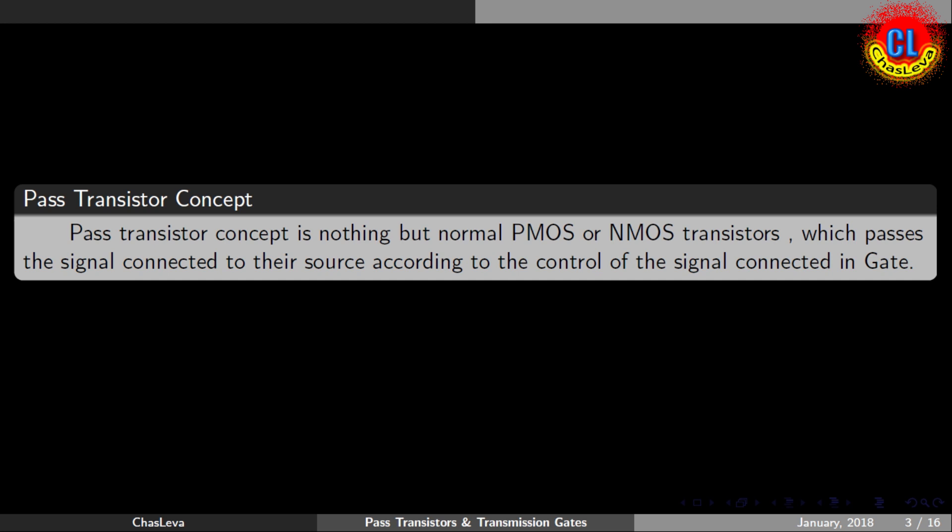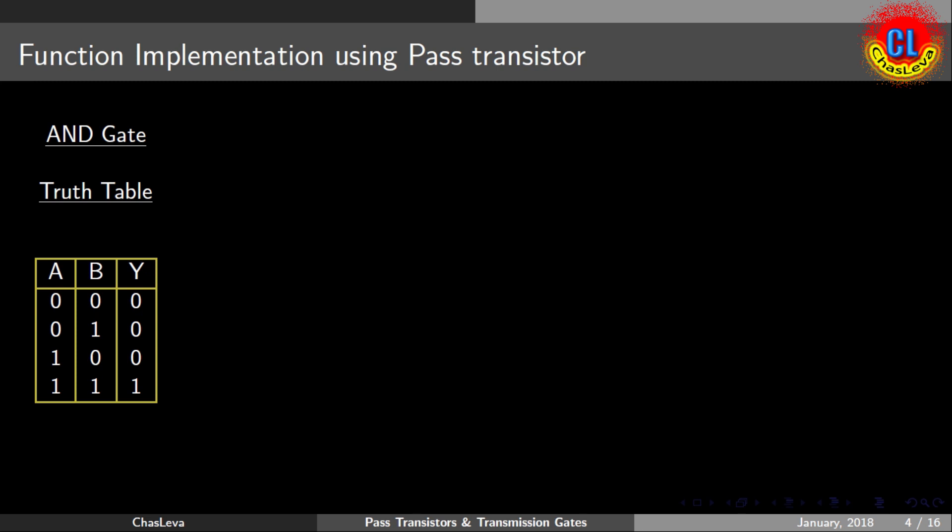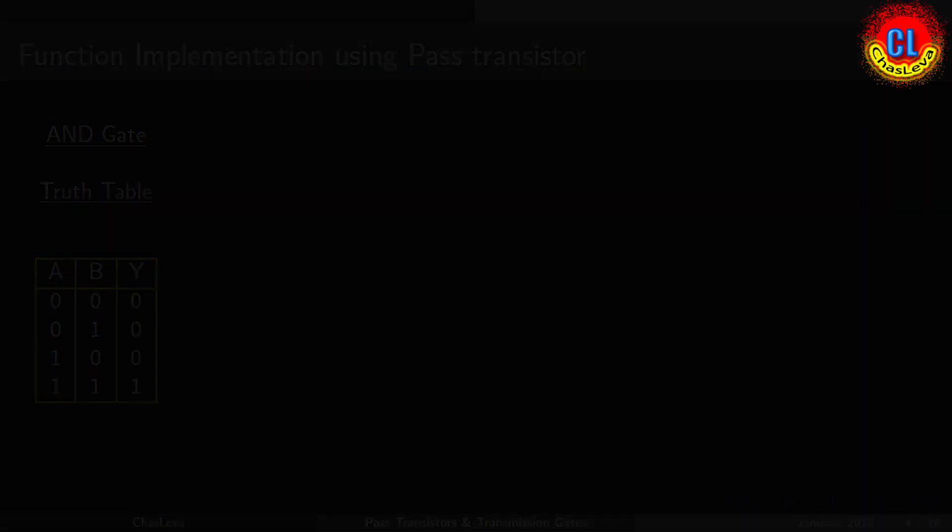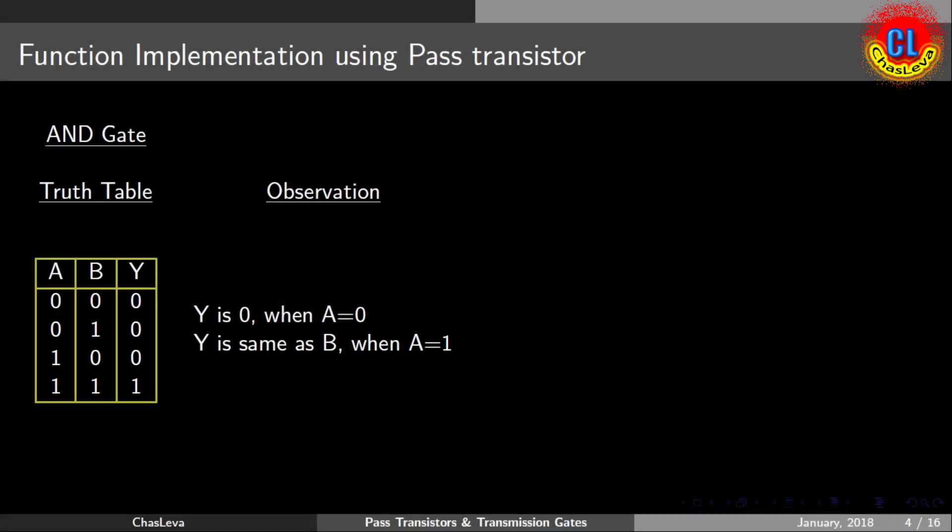Now we will see the implementation of a function using pass transistor. Here we will take an AND function. We all know the truth table of AND gate. The output Y of AND gate will be one only if both inputs A and B are one. By seeing the truth table, we can conclude that the output Y is zero when input A equals zero, and Y is same as B when A equals one. So we can draw the circuit now.